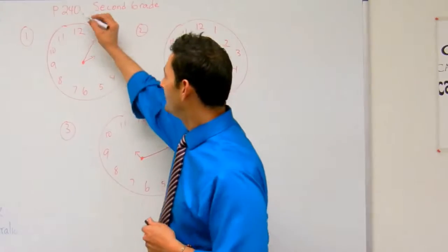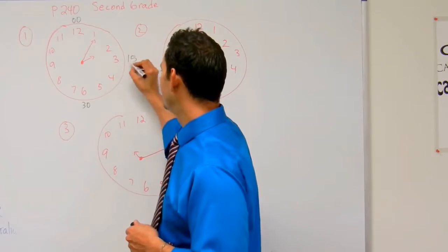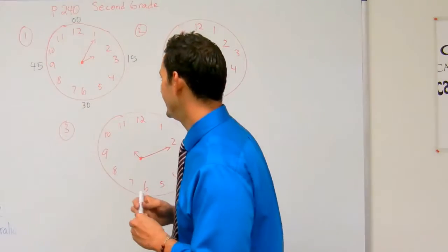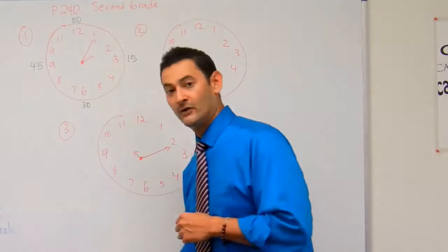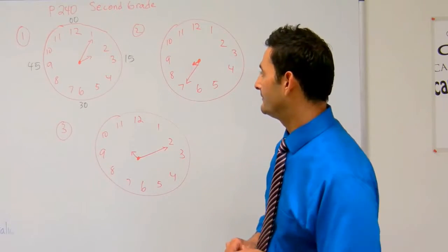And let me remind you that the 12 is going to be zero, that's 30, that's 15, and that's 45 minutes. But that's really 60 minutes, but when we write it we write the zero zero. So let's go ahead and take a look at number one.